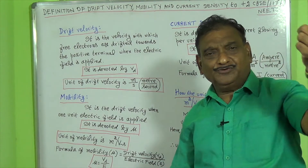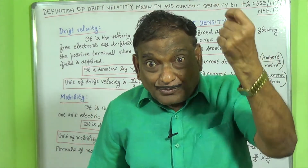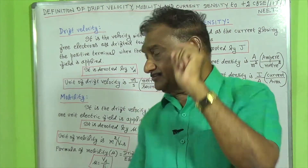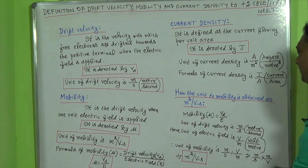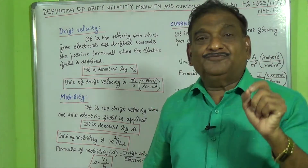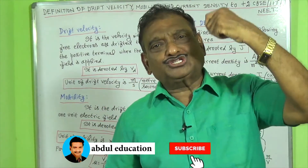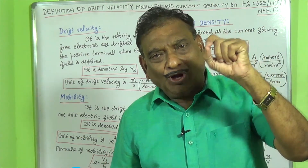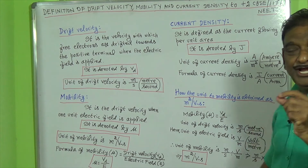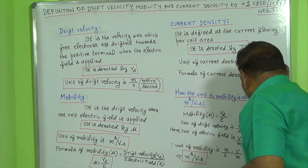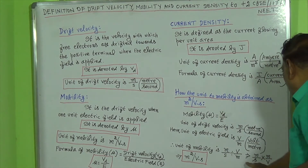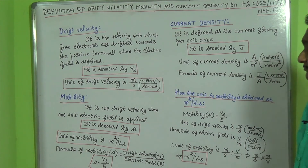The unit of electric field we select is volt per meter. So dividing the unit of drift velocity by electric field: (m/s) divided by (V/m). Since the divisor is a fraction, it is reciprocated and multiplied. The capital V becomes the denominator and the small m becomes the numerator, giving us meter square per volt second.